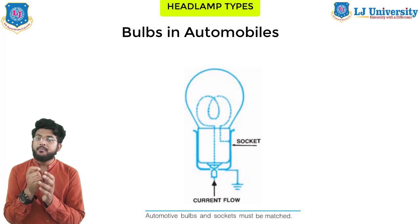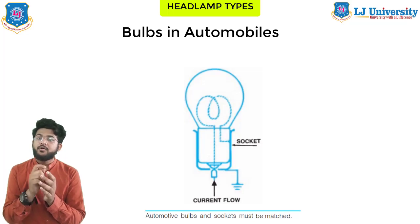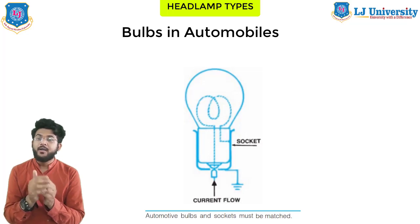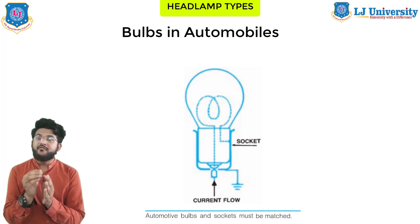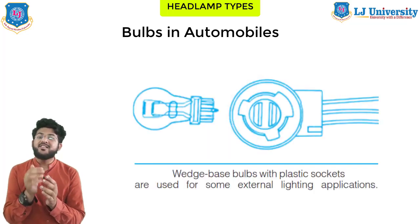A single contact bulb contains one filament; a double contact bulb has two filaments. The ground end of the bulb filament is connected directly to the base of the bulb, which is grounded through the socket contact. In many cases a separate ground wire leads from the socket to the ground connection. All double contact bulbs are indexed so that they will fit into the socket in only one way — this is called an indexed base.